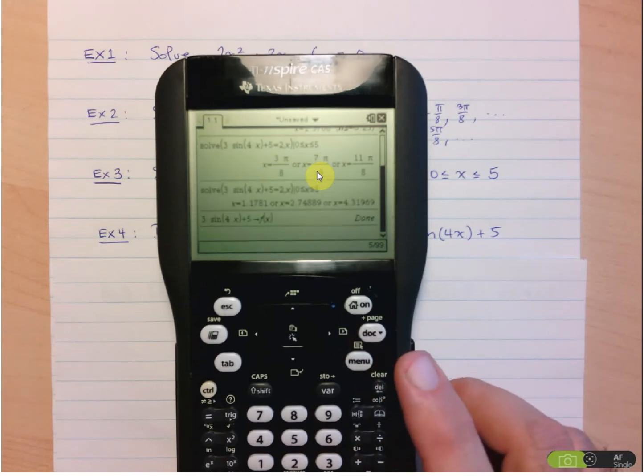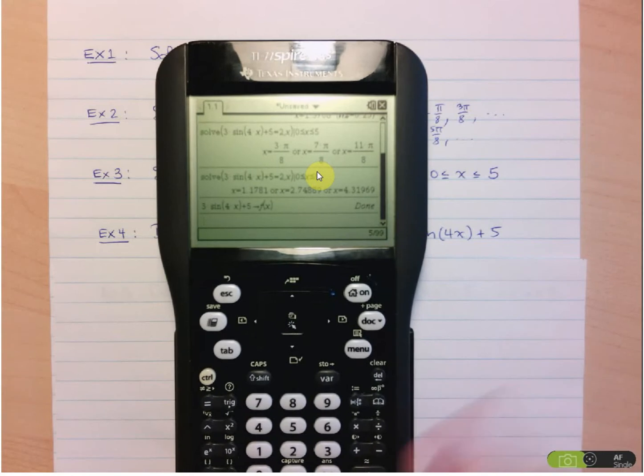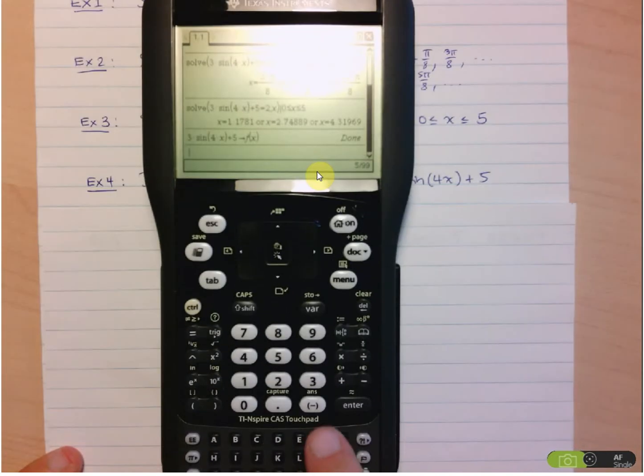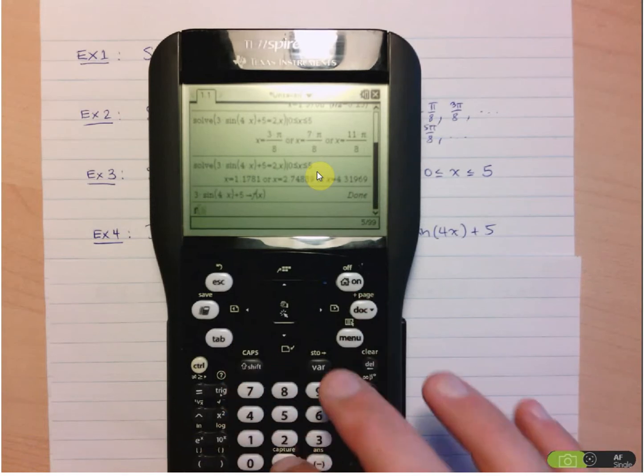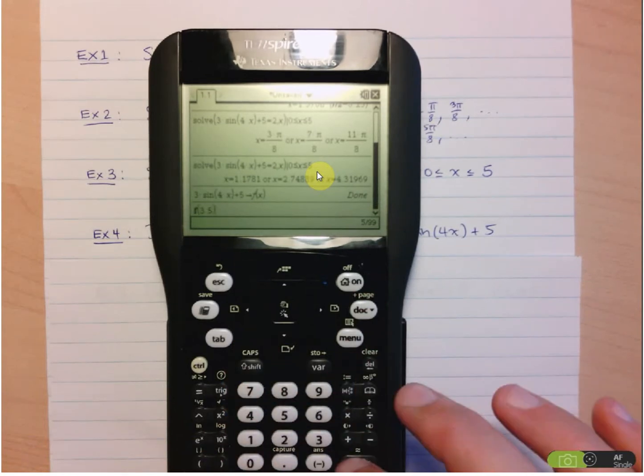So now what we can do is we can actually calculate function values. So if I want to calculate the function value at 3.5, I just do, I'll just show you here again. Remember, use your keypad for your letters, so F at 3.5, and there you go. Gives you your answer.